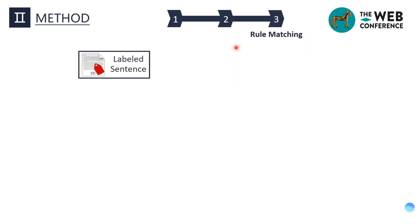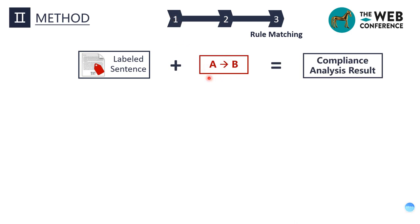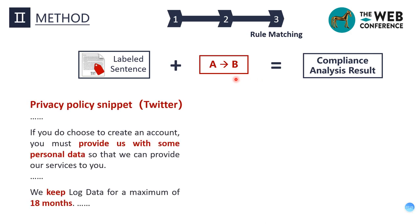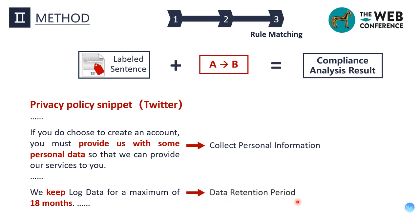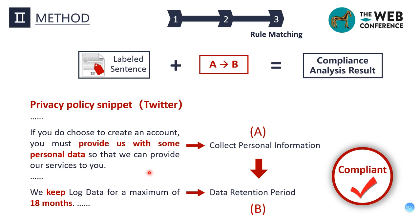After getting the classification results of each sentence, we proceed to the third step: rule matching. Using the sentence classification results from the second step and the rule A implies B from the first step, we can get the compliance analysis result. In the example of a snippet of Twitter's privacy policy, one sentence is classified as collecting personal information and another as data retention period. It can then be clearly detected by the rule A implies B, and it can be determined that the privacy policy is compliant on this regulation.